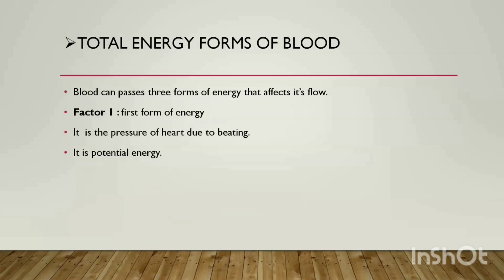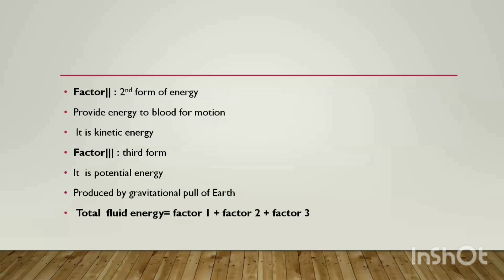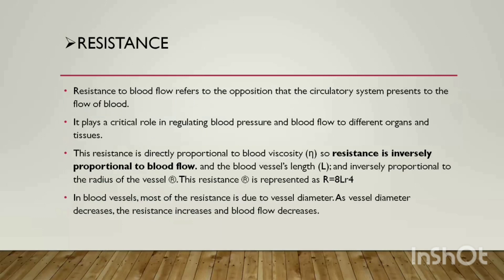Total energy in blood is produced in three forms. First: potential energy — produced when the heart contracts and beats. Second: kinetic energy — produced due to the movement of blood in blood vessels. Third: energy due to gravitational pull — which affects us even when we are seated. Combining all three forms gives the total fluid energy.